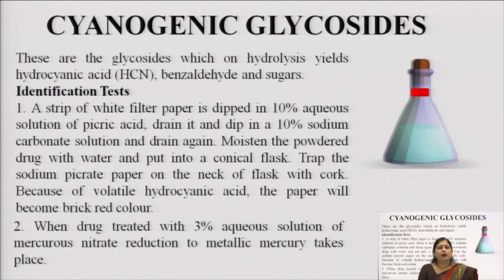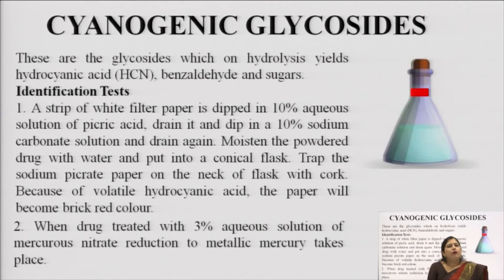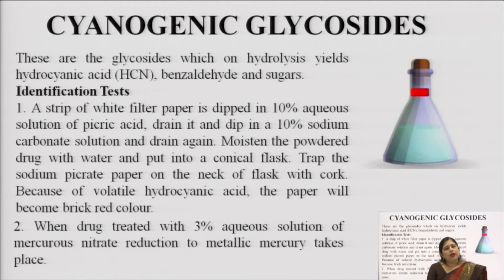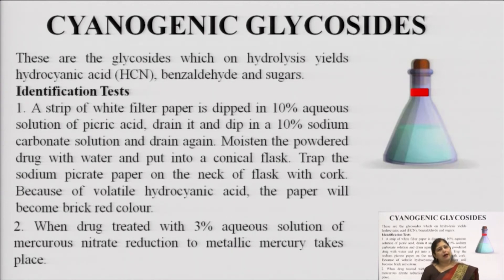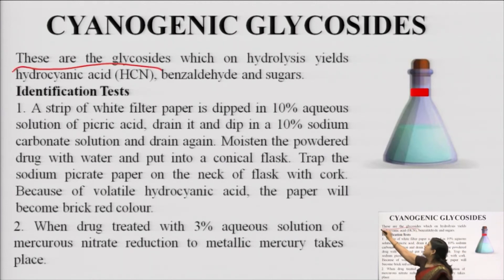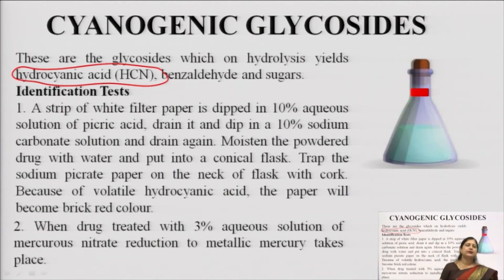We now move to cyanogenic glycosides, also called cyanogenetic glycosides. Glycosides are substances which have one glycon ring joined with an aglycone ring by a glycosidic linkage. In cyanogenic glycosides, the peculiarity is that on hydrolysis they release hydrocyanic acid along with benzaldehyde and sugars. The main identifying ingredient is hydrocyanic acid or HCN, which is yielded on hydrolysis of cyanogenic glycosides.